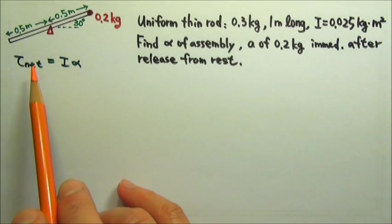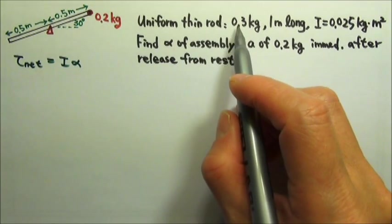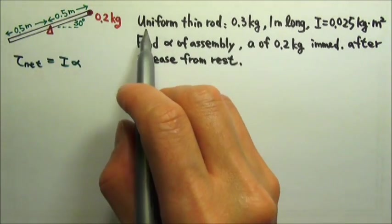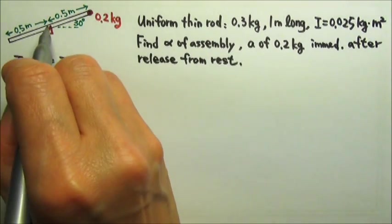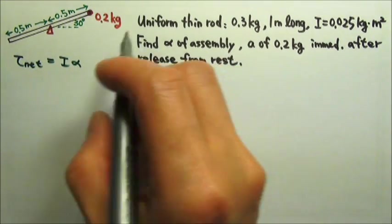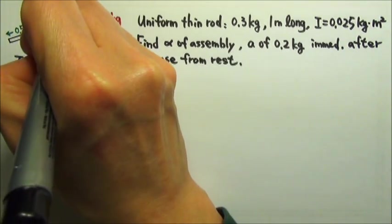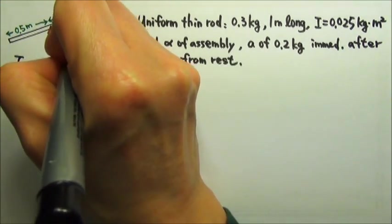We have gravitational force Mg. For Mg, we draw them at the center of mass. For the 0.3 kg rod, it is uniform, so the center of mass is at the center of the rod. So the weight Mg, 3 newtons, would act from the center of mass.